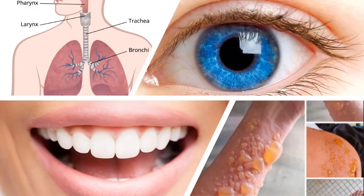Tear gas affects your lungs, especially your eyes, mouth, respiratory system, and your skin. Other than body parts, your clothes, wristwatch, earrings, or any item can be contaminated with smoke particles, and it will badly affect your health.